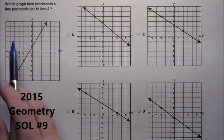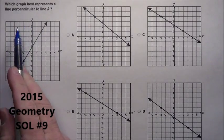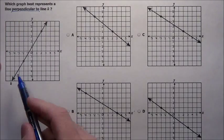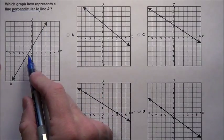Alright, we have problem number 9 here. It says which graph best represents a line perpendicular to line K? That means it is coming across it at 90 degrees. So here is line K, we have to figure out the slope of this.